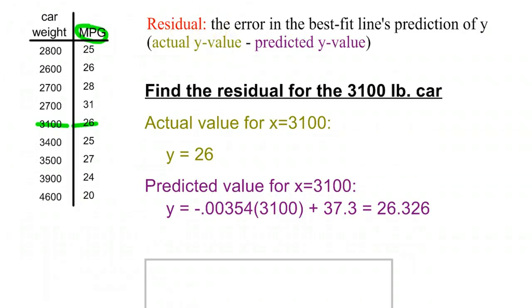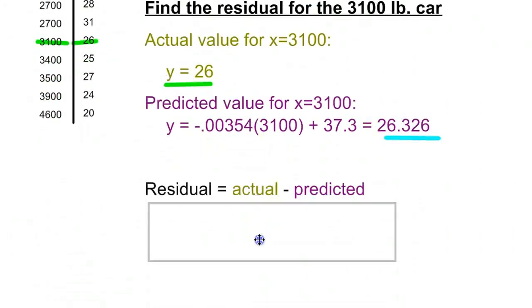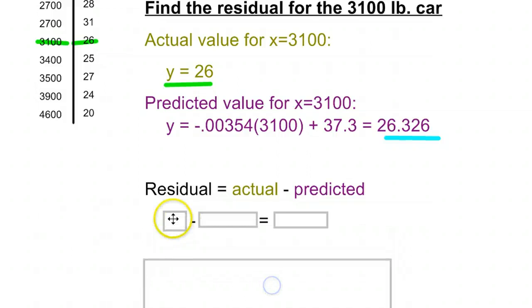So now we have the actual value and the predicted value. We know what y is and what y was supposed to be. And if we take our actual number minus our prediction, our predicted value, we're going to see that our residual will come out negative. So actual minus predicted in this case comes out to be negative 0.326. That absolutely can happen. That's totally normal to have a residual come out negative, actually about half the time.